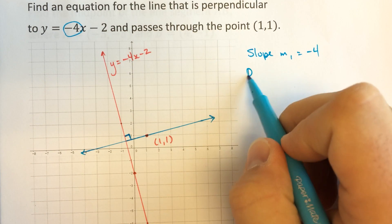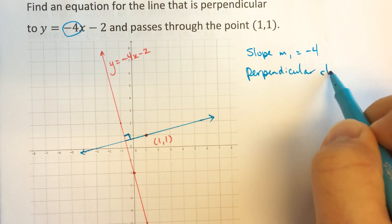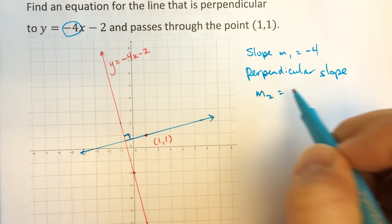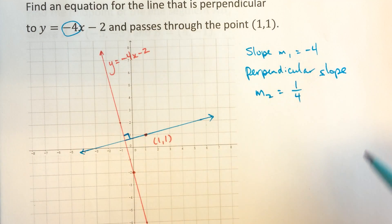So that means the perpendicular slope, which I'm going to call m2, is the negative reciprocal of this. It's 1 over 4, and it's positive.